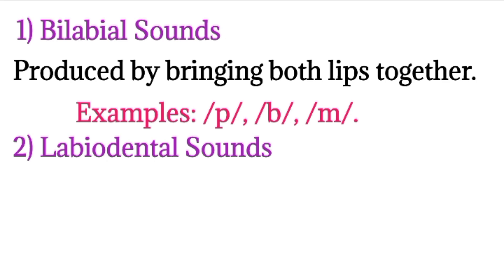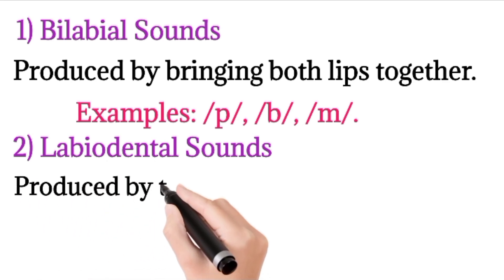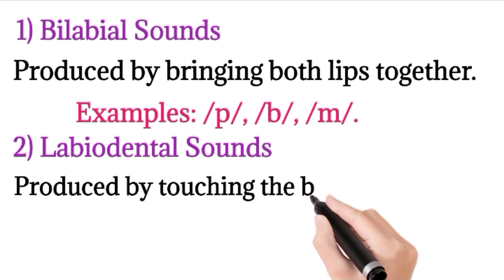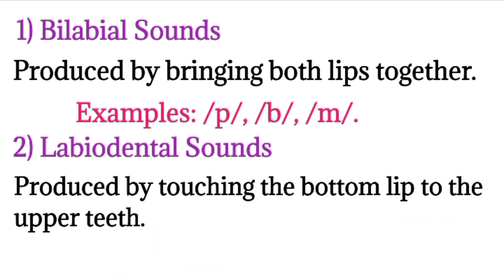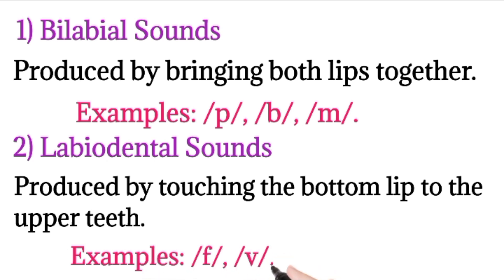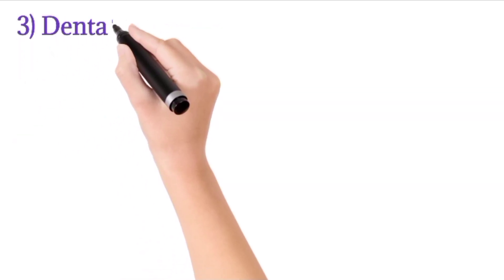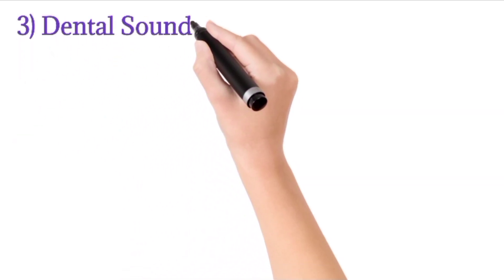The second place is labiodental. 'Labio' means lips and 'dental' means teeth, so lips and teeth combine in the production of these sounds. Labiodental sounds are produced by touching the bottom lip to the upper teeth. For example: /f/ and /v/. In these sounds, the bottom lip is touching the upper teeth.